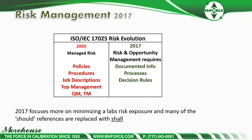In 2017, the requirements are different. It focuses more on risk and opportunity and requires documented information and processes. The big one is decision rules — that's what we're talking about today. Method 5 and Method 6 are decision rules. The 2017 focus is more on minimizing a lab's risk exposure, and many of the 'should' references from 2005 are replaced with 'shall.'